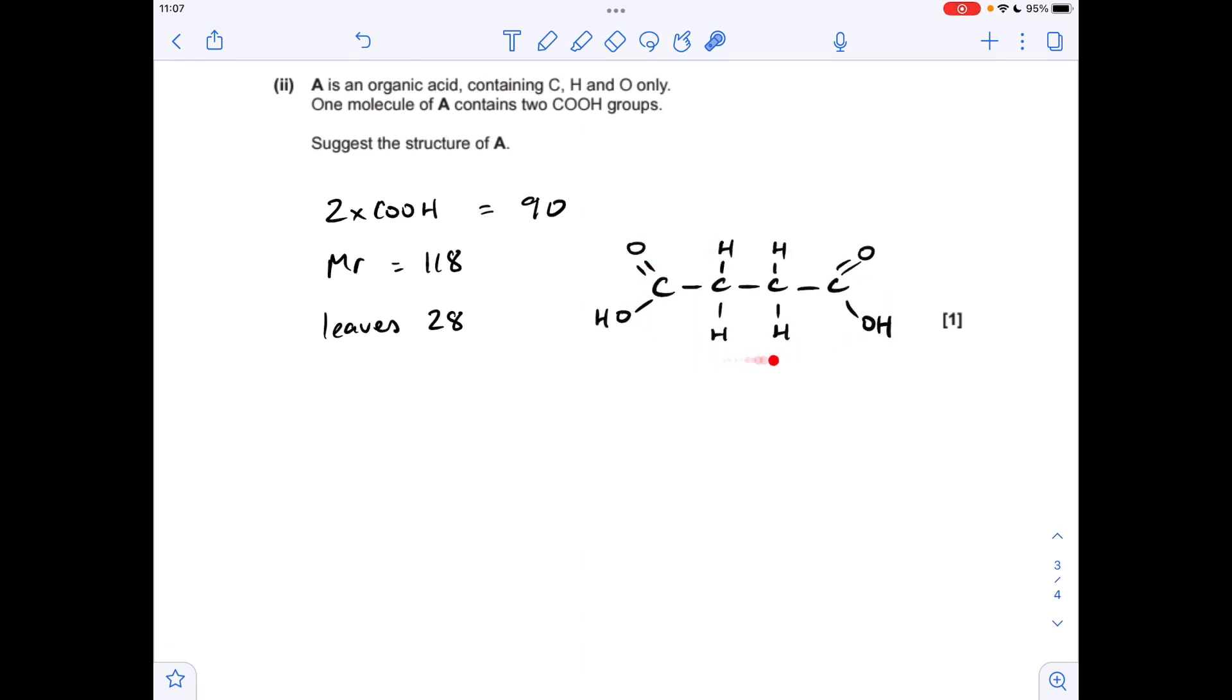There's a couple of possible structures, so there's one, that 28 there, that CH2CH2 group. Or you could have that, where you've got a central carbon with a methyl and a hydrogen, still got that MR of 28.